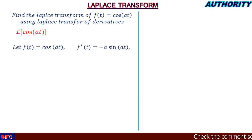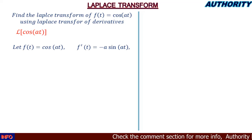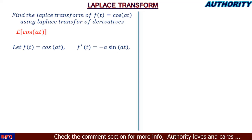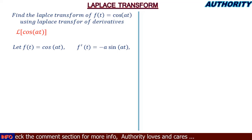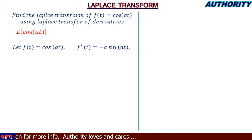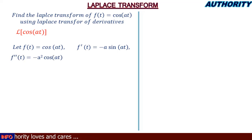We have the function given as cos(at) and we want to use the Laplace transform of derivatives, so we are going to differentiate this function f(t). When we differentiate f(t) = cos(at) we get f'(t) = −a·sin(at). And if we differentiate a second time, we get f''(t) = −a²·cos(at).